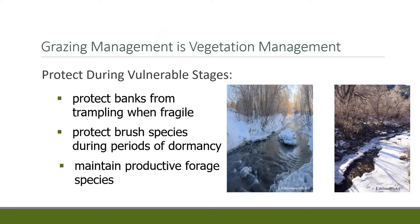We need to be cognizant of vegetation management during vulnerable stages for the stream. The exact vulnerable stages depend on the stream type. Sometimes we need to protect banks from trampling when they're fragile, such as early spring when they're inundated and compaction is a risk. We might need to protect brushy species during dormancy in winter because shrubs have good vitamins, minerals, and protein then, attracting animals to woody vegetation. Another period of vulnerability involves maintaining sufficient forage species.